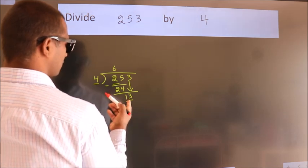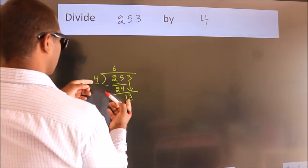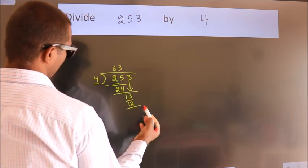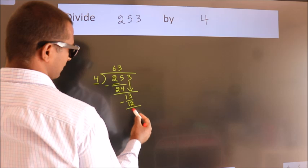A number close to 13 in 4 table is 4, 3 is 12. Now we subtract. We get 1.